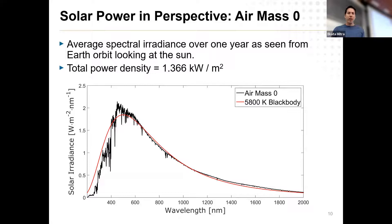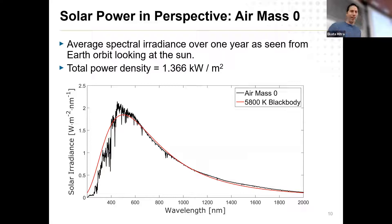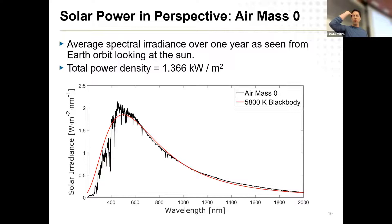To understand turning photons into electricity, imagine you're floating in Earth orbit with a spectrometer pointed at the sun, averaging everything you see over a year. You get what's called the air mass zero (AM0) solar spectral standard. The units are watts per square meter per nanometer — different wavelengths carry different energy, and this is the spectral distribution. If you take the area under this curve you get watts per square meter, and the total power density is about 1.366 kilowatts per square meter.